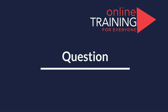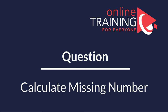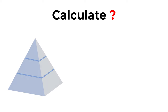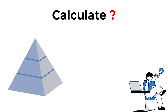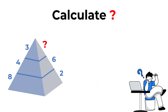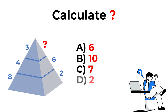Here's a cool question you frequently see on the test. You need to calculate the question mark in a three-layer pyramid. On the bottom layer: numbers 8 and 2. On the middle layer: numbers 4 and 6. On the top layer: number 3 and a question mark on the other side. Choices: A: 6, B: 10, C: 7, D: 2.